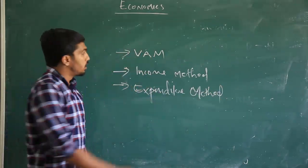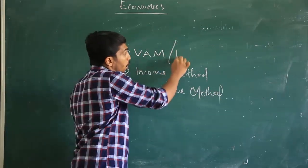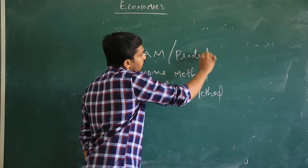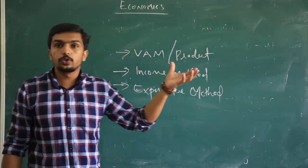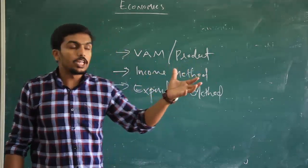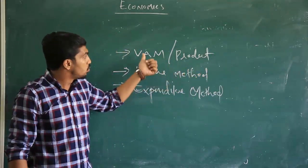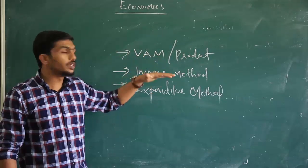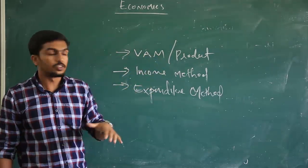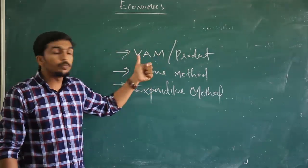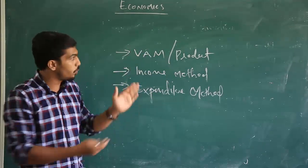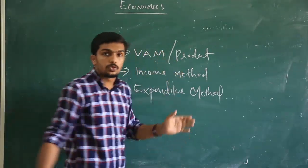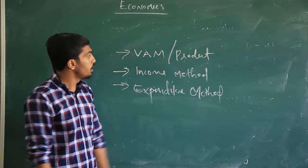The Value Added Method is also called the Product Method. This is the first method we use to estimate national income. Here we analyze the value of goods and services in an economic system, and on the basis of that value, we analyze the national income. We use three components to determine national income using the value added method.